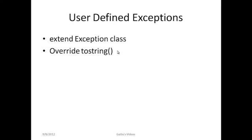For user-defined exceptions, whatever class we create for the exception must extend the main Exception class. There are two steps to follow: first, the class should extend the Exception class; and second, the class has to override the toString method so that we can display the proper message for that exception when it is called.